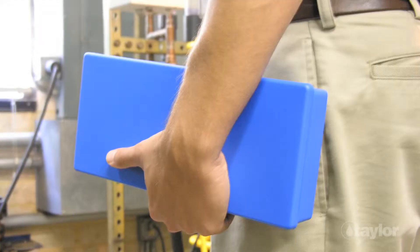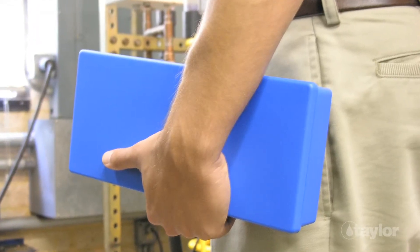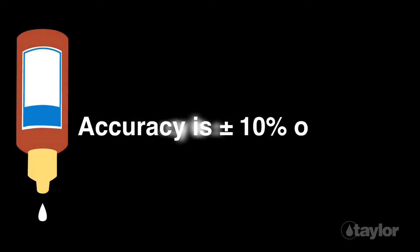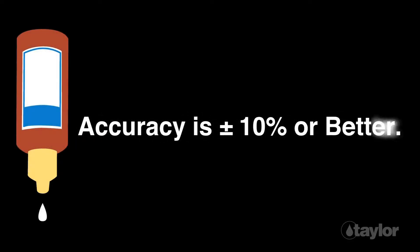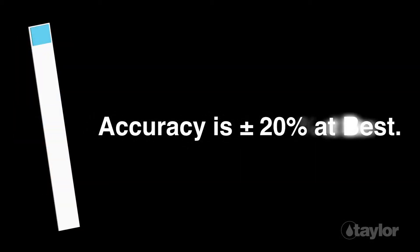Drop count titrations are preferred for the field because of their portability and ease of use. Taylor's drop tests have an accuracy of plus or minus 10 percent or better, whereas test strips have an accuracy of plus or minus 20 percent at best.